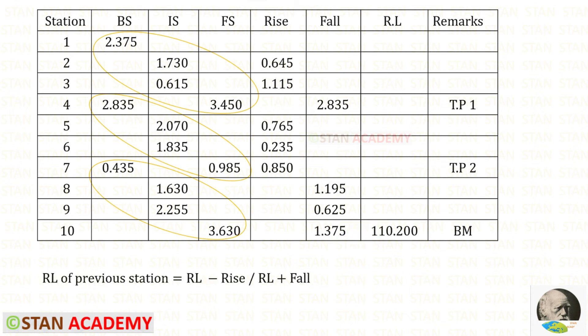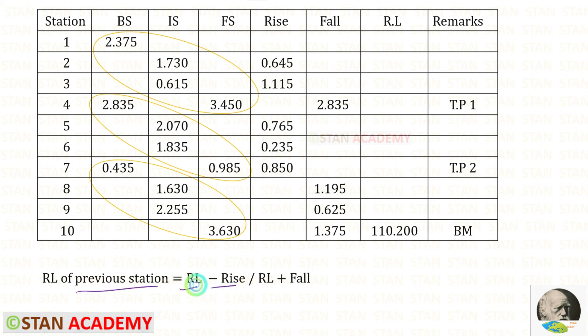In the previous problems the reduced level for the first point was given, but in this one the reduced level for the last point is given. In this case, we have to find the reduced levels from the bottom to the top. Previously, if it was rise we added and if it was fall we subtracted. But here it is totally different — to find the reduced level of the previous station, if it is rise we subtract from the reduced level, and if it is fall we add to the reduced level.